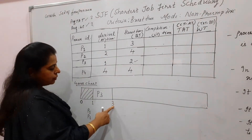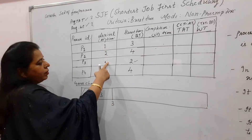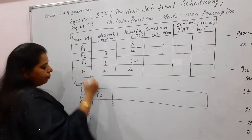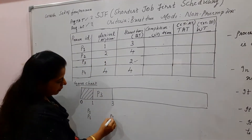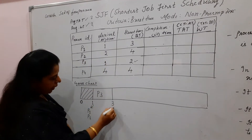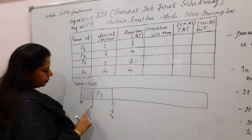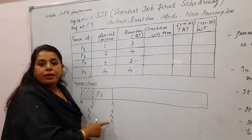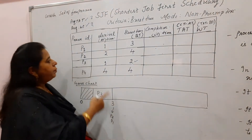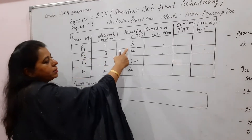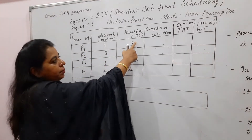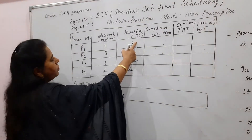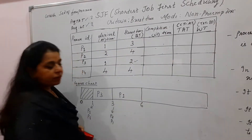Next, at time 3, which processes are available? P2 has arrived at time 2, so P2 is there, and P1 is still waiting. At this point we have two processes: P2 and P1. Among these two, P1 has the lower burst time. So we schedule P1. P1 requires 3 units, so it completes its job at time 6.